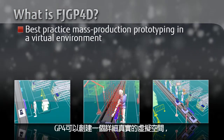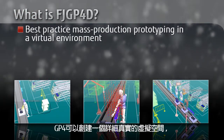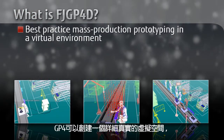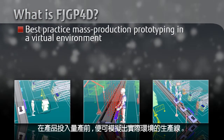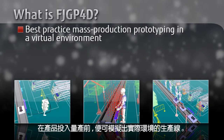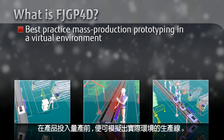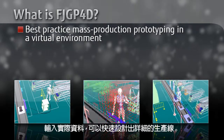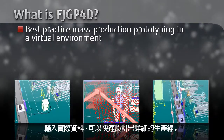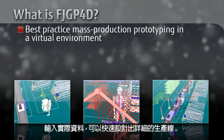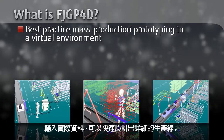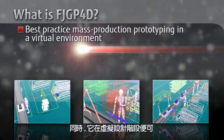GP4 creates detailed virtual spaces to enable production trials before plans for the actual production line are drafted. By using real data, it is easy to create highly detailed production line designs.